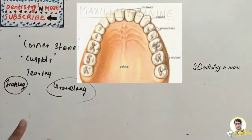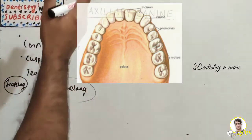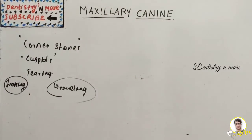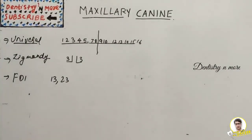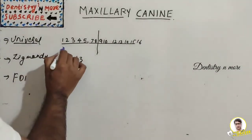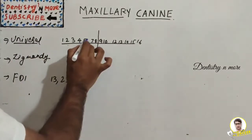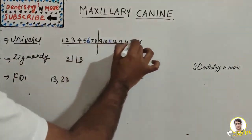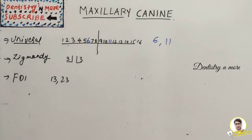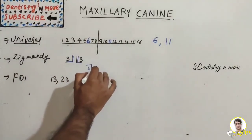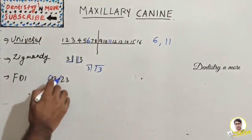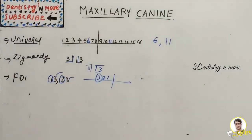In terms of position, on the mesial side the canine has the lateral incisor and on the distal side the maxillary first premolar. For tooth numbering: in the Universal system, the right upper canine is 6 and the left upper canine is 11. In the Palmer system, it is denoted by a quadrant symbol. In the FDI system, they are 13 and 23, where the first digit is the quadrant and the second digit 3 is the tooth number.